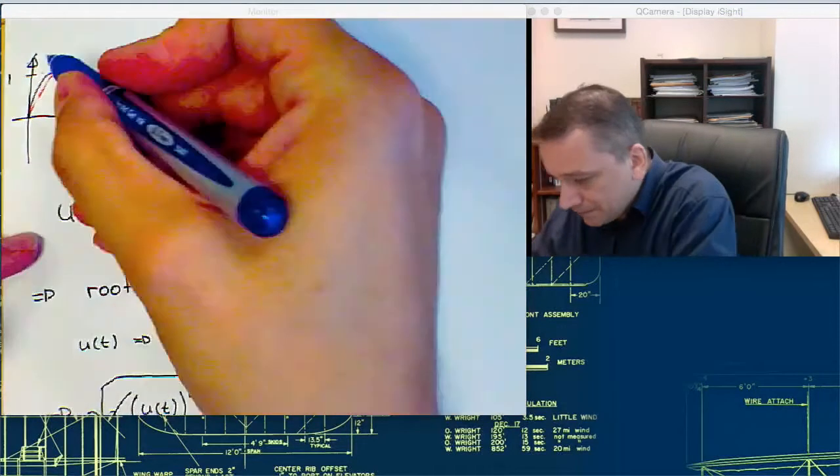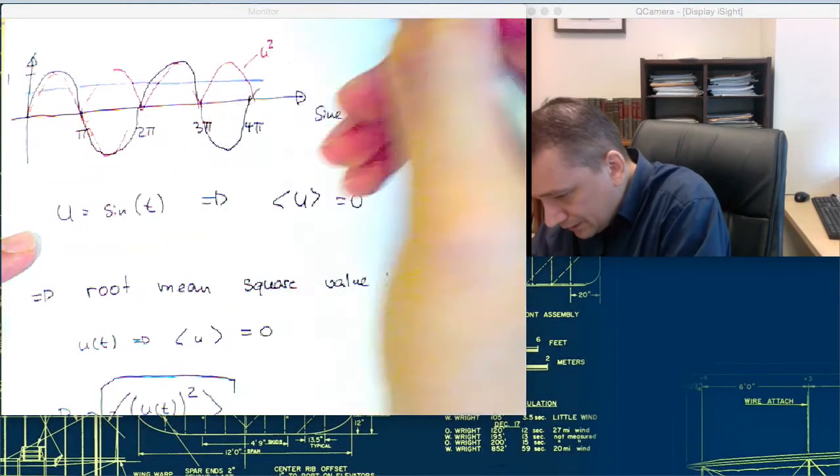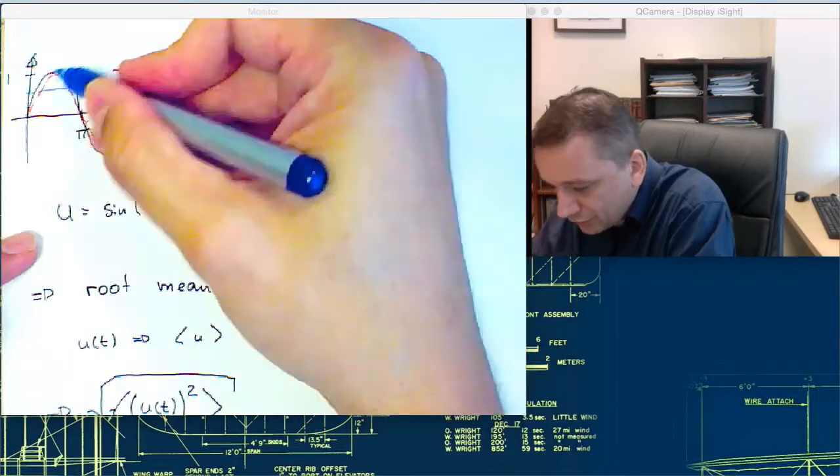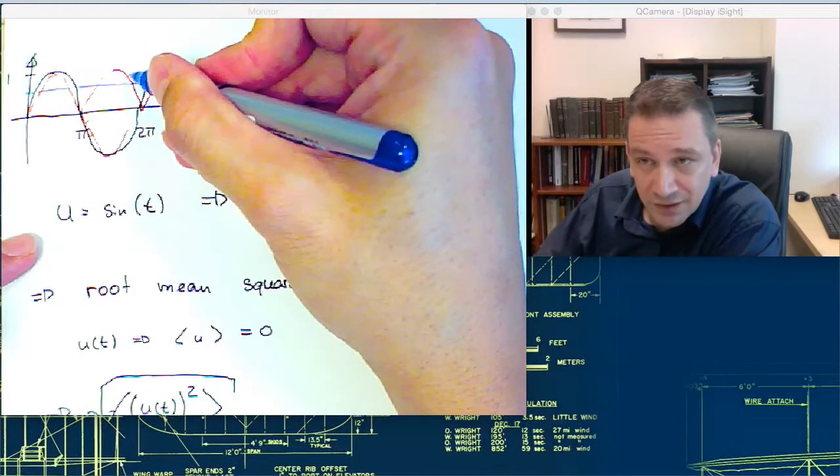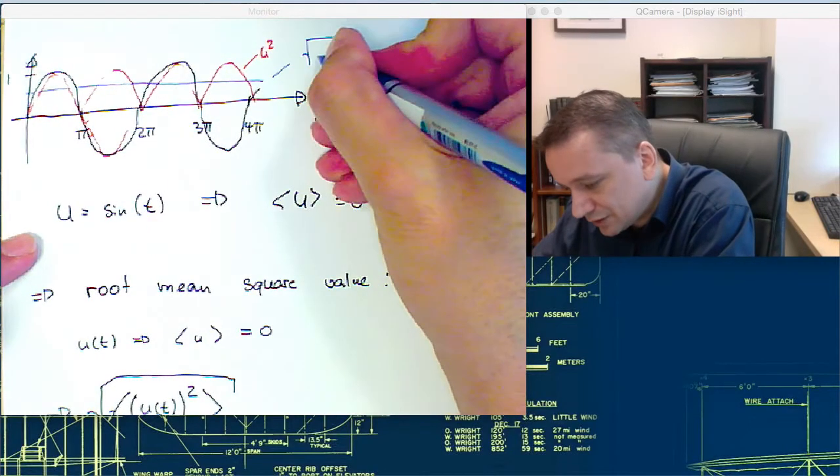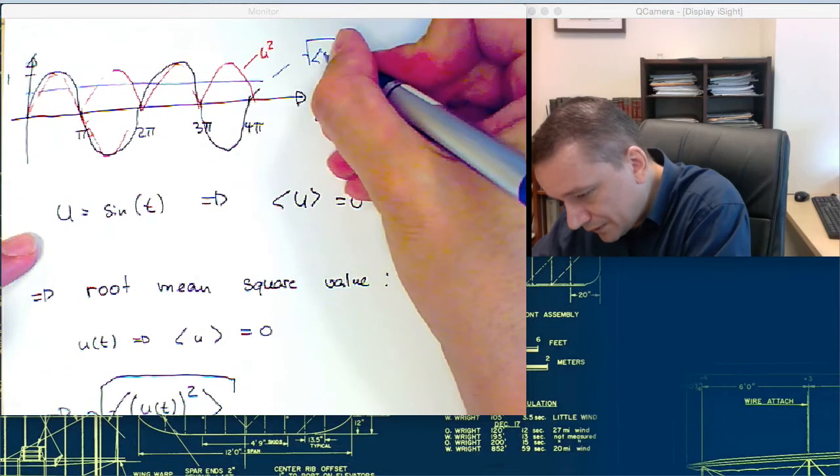So here, mean value, so the RMS value should be something like this. Where you first square and then take the, to flip over all the functions over there. And then you're taking the average of it, the square root of it. So this one's going to be the root mean square of u.